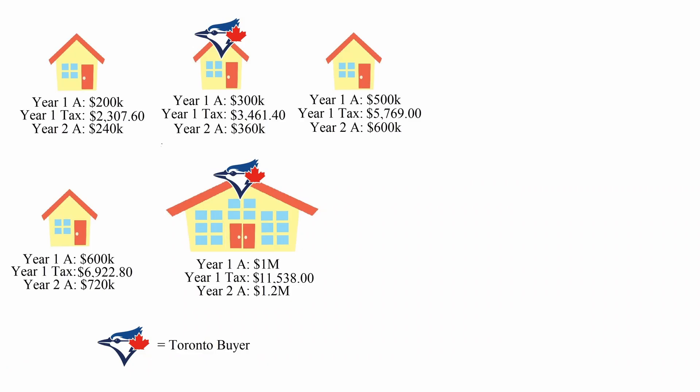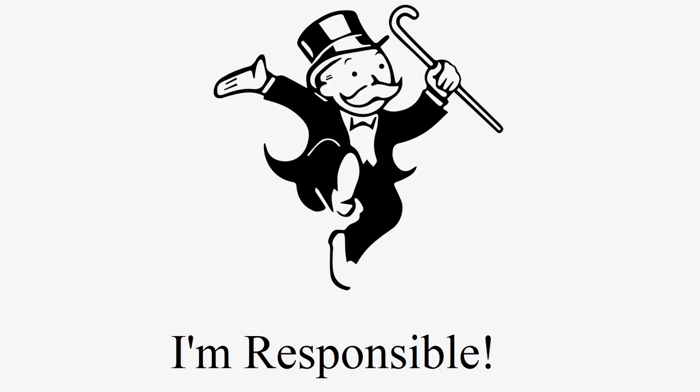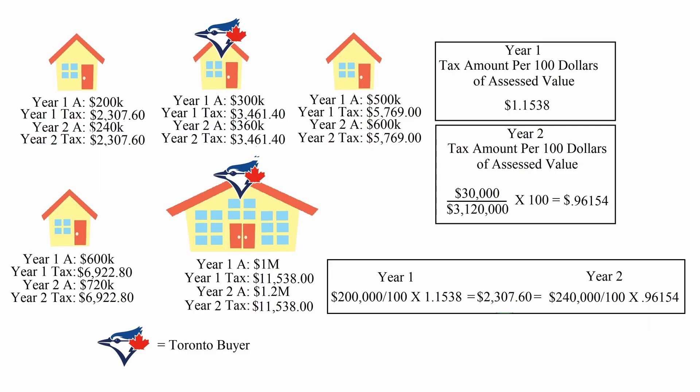Now, we'll say it's a new year and assessments are up 20% for every home in town because of all those Toronto buyers. And the local government, amazingly, still only needs to raise $30,000 from property taxes. Since all the assessments went up 20%, and thus the total of all the assessments went up by 20%, everyone would still have the exact same tax bill as last year. In fact, the tax rate would technically go down, but it's offset by the increase in assessments.